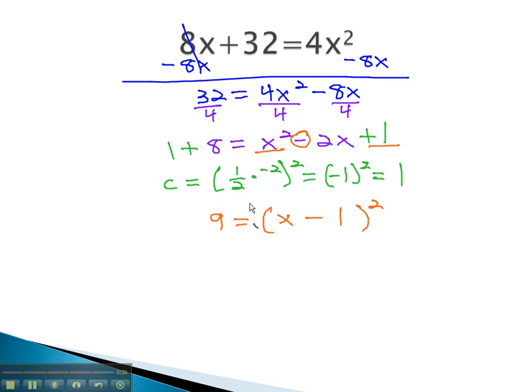We can quickly solve by taking the square root of both sides, remembering the plus or minus 3 equals x minus 1. Adding 1 to both sides gives us 1 plus or minus 3 equals x.